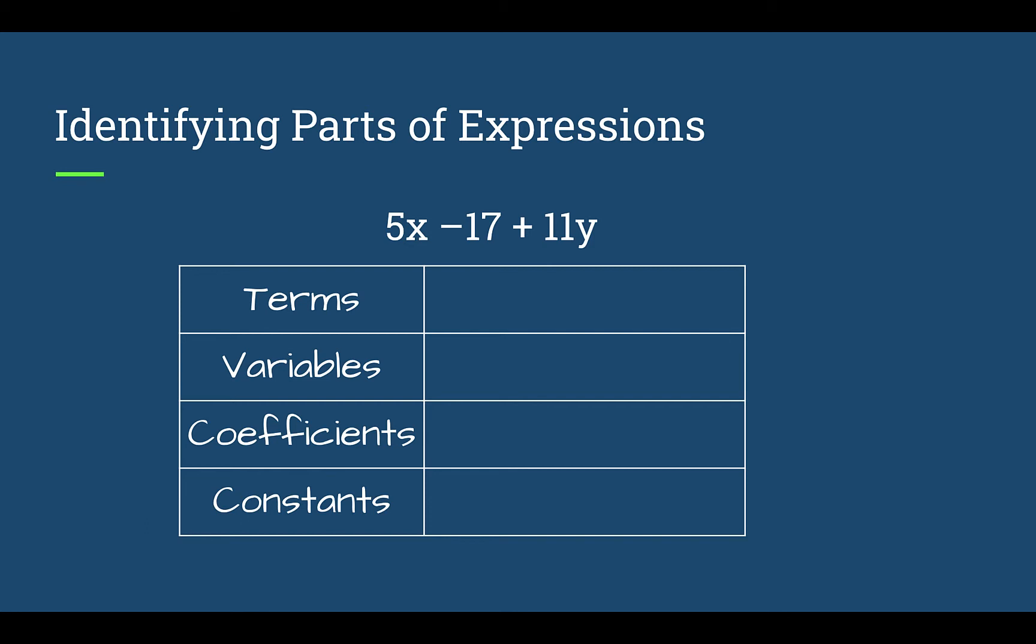Okay, so our first word is terms. Remember, terms were separated by a plus or a minus. So here I have a minus and here I have a plus. My three terms are separated. Now, I have 5x and then a minus. So the 5x was one term. Then I had 17 and then a plus. Okay, and then I have 11y. So my three terms, 5x, 17 and 11y.